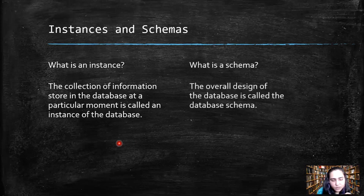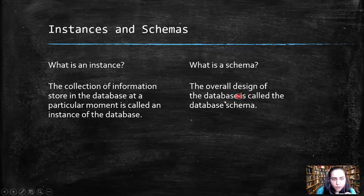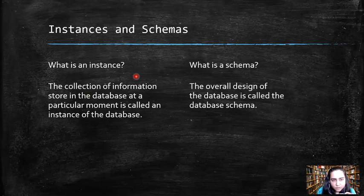What is a schema? Schema is the overall design of the database. This design is most of the time made by the database administrator. The design is very helpful in creating the database and using it properly. This design hardly ever changes because you make it in such a way that it's going to last. An instance, on the other hand, keeps changing every time the information stored in the database changes. That's the difference between an instance and a schema.